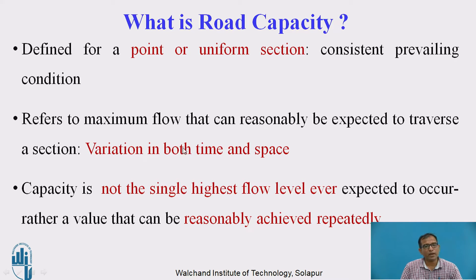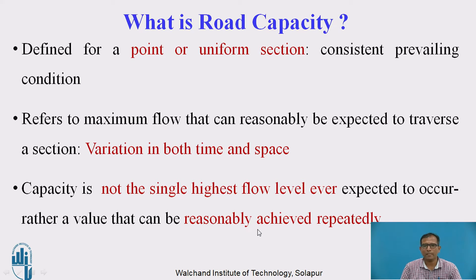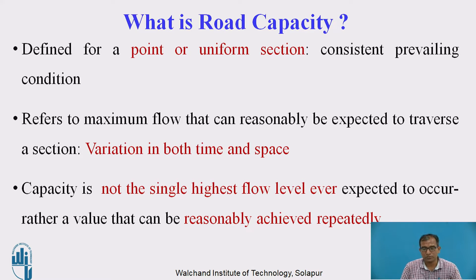Capacity refers to the maximum flow rate that can reasonably be expected to traverse a section. Capacity will change according to time and space. Capacity is not the single highest flow level ever expected to occur; rather, it is a value that can be reasonably achieved repeatedly. For example, if capacity is 2000 PCUs per day, that value can be reached more than two or three times within the same day.